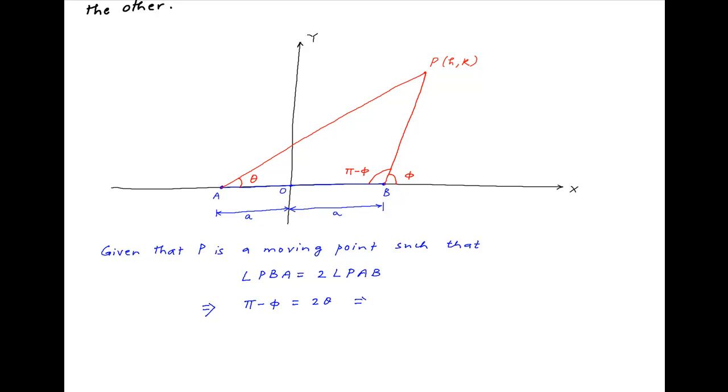Taking the tangent of both sides we get tan(pi minus phi) is equal to tan(2 theta), which implies that minus tan phi is equal to 2 tan theta divided by 1 minus tan squared theta.